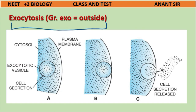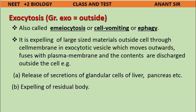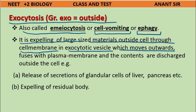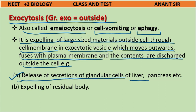Exocytosis (Greek: exo = outside), also called emeiocytosis or 'cell vomiting,' is the expelling of large-sized materials outside the cell through the cell membrane in exocytotic vesicles. These vesicles move outward, fuse with the plasma membrane, and contents are discharged outside the cell. Examples: release of secretions of glandular cells of liver, pancreas, etc., and expelling of residual bodies.